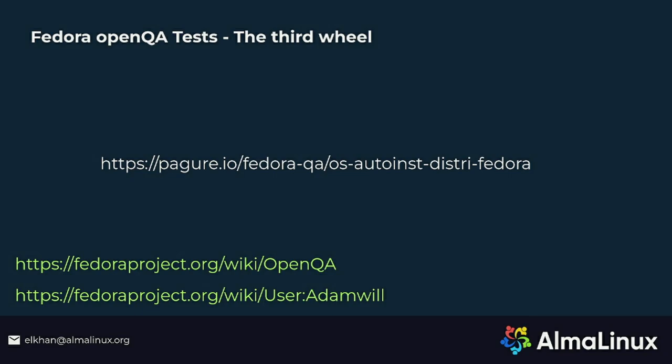Talking about the third wheel — let me explain the situation we were in. After FOSDEM last year, we saw a great talk about OpenQA and were excited to test AlmaLinux with it, but we had very little time before the next AlmaLinux beta release. So while doing everything to make OpenQA usable, we also needed tests. Instead of writing from scratch, we based our tests on the Fedora OpenQA tests, and it worked very well.